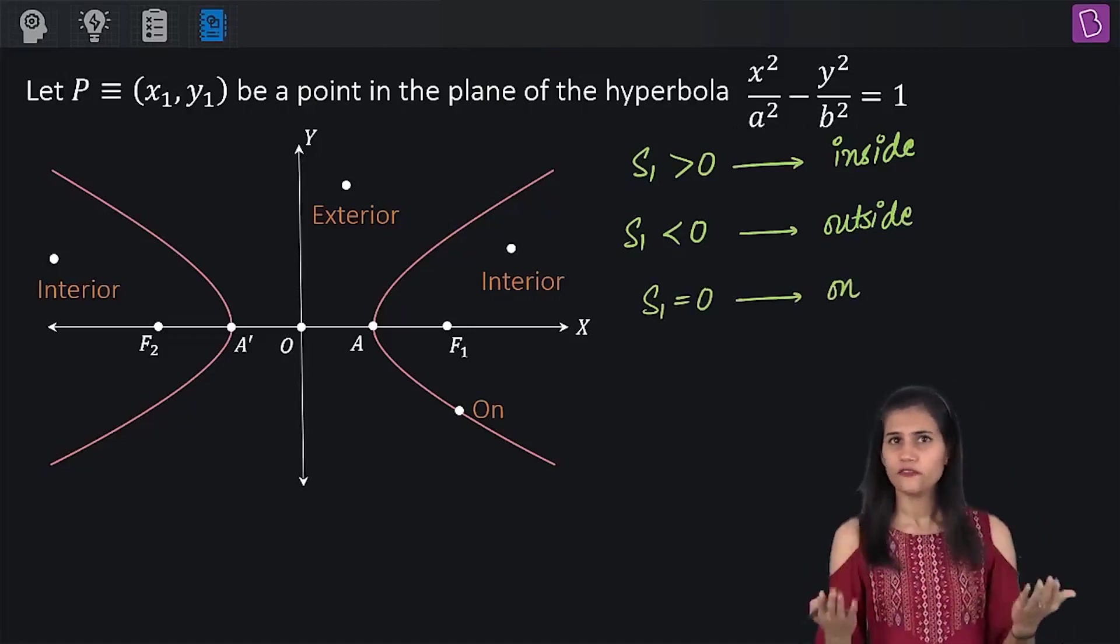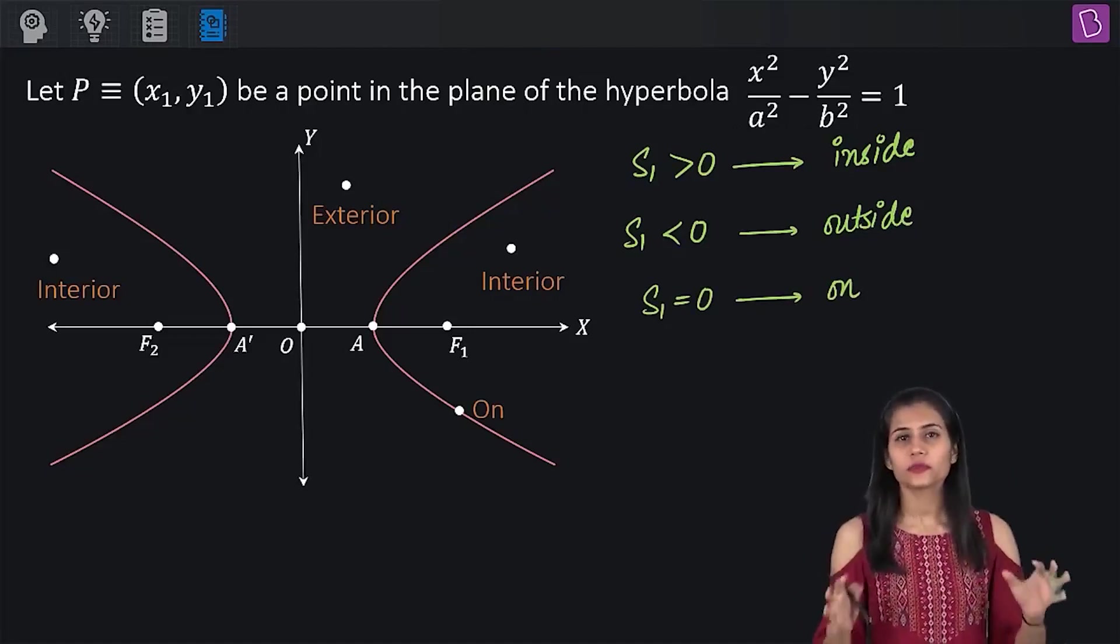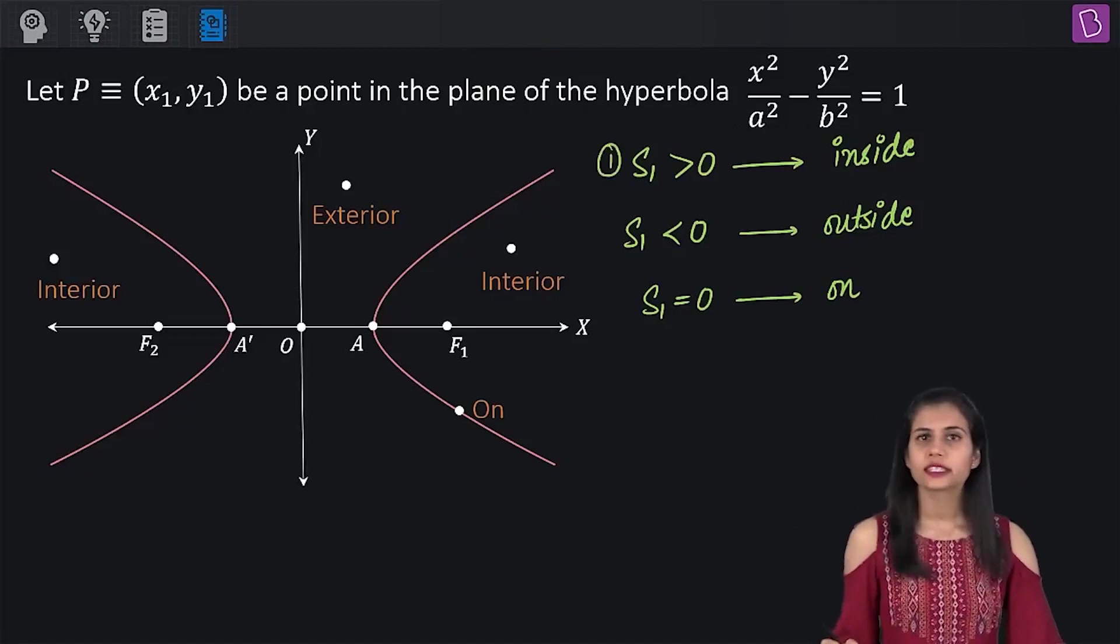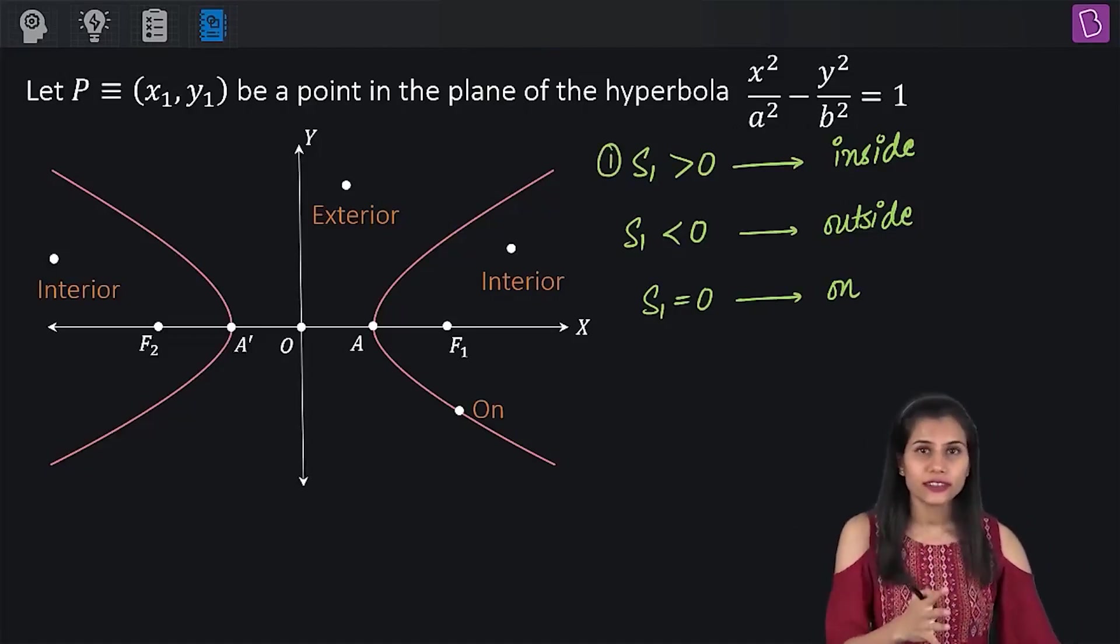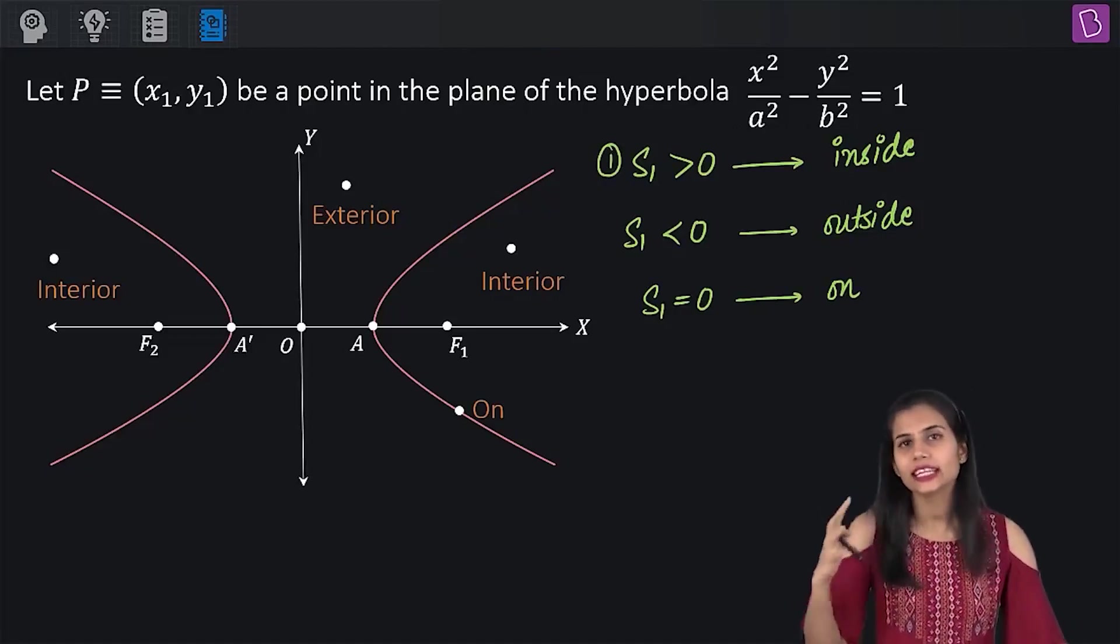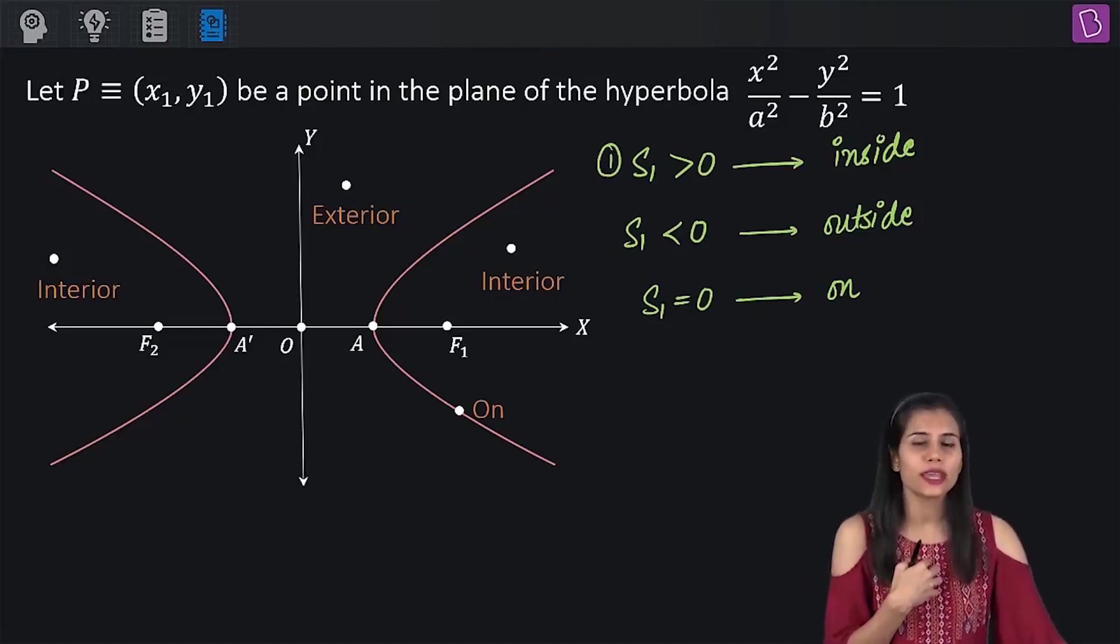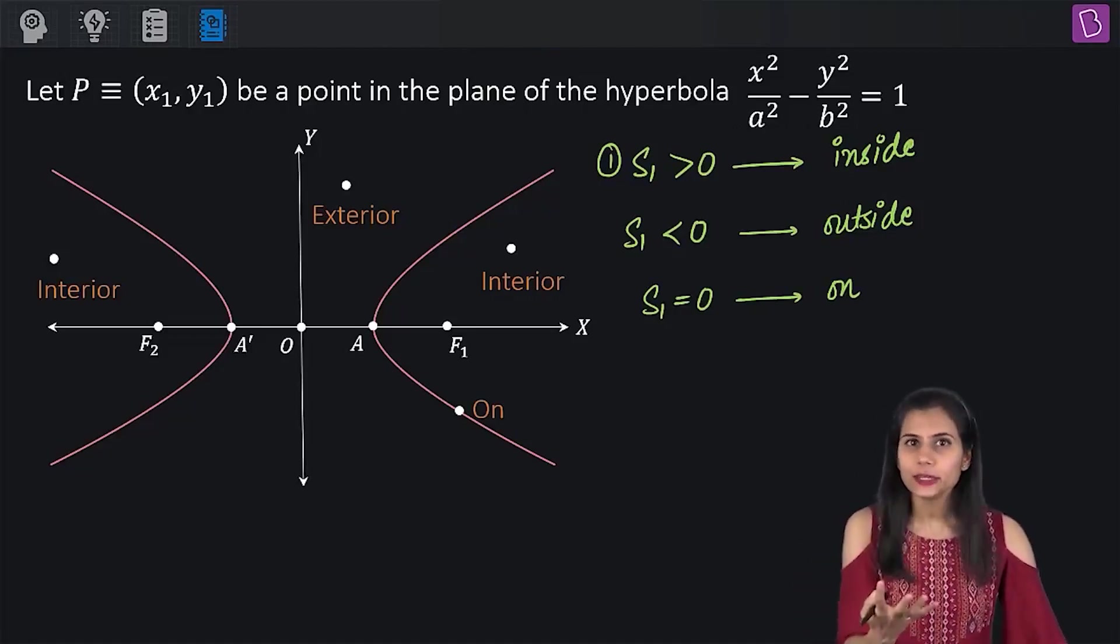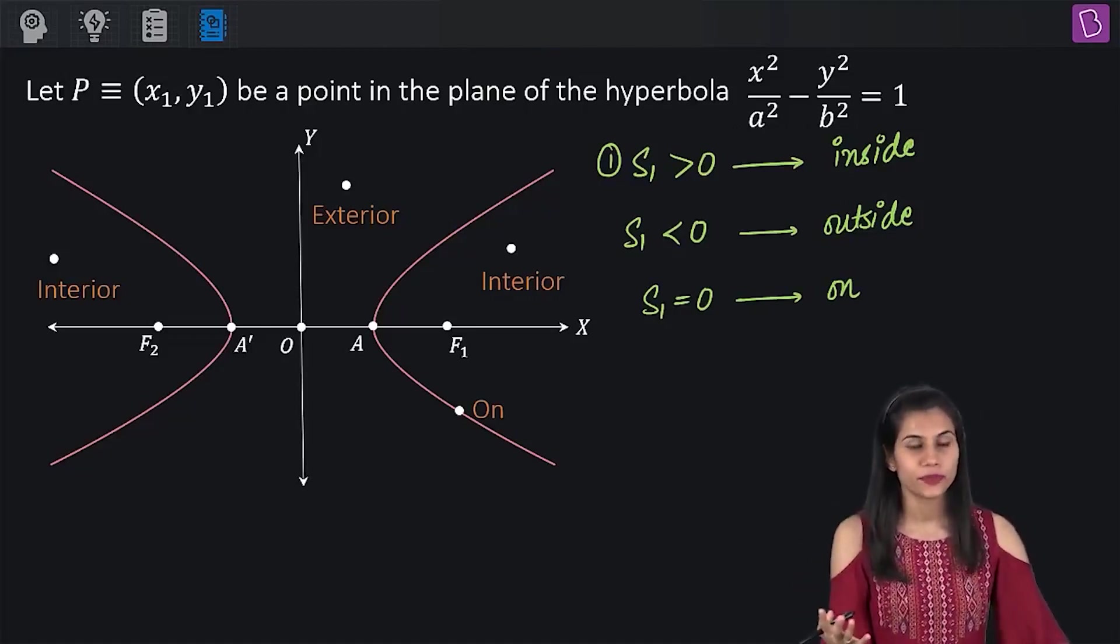If you are able to remember this, very good. If you are not, trust me, it's very simple to justify this. For example, let's take the first case. If I want to show that S1 greater than 0 implies the inside region of the hyperbola, that means in a way I'm trying to show that the value of S at any interior point will be positive.